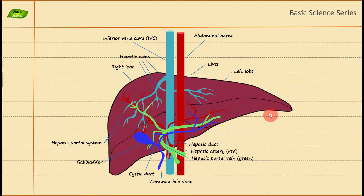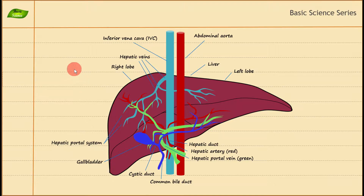Other important liver functions include protein synthesis and storage of glucose as glycogen. The liver also helps in making bile, which helps in the breakdown of fat molecules. Additionally, the liver stores fat-soluble vitamins: A, D, E, and K. We discussed these functions in our previous video, and in this video we're going to dig deep into the cellular architecture of the liver.